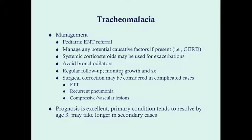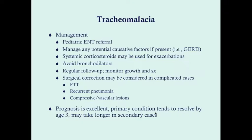Avoid bronchodilators as they tend to worsen tracheomalacia. Schedule regular follow-up to look for failure to thrive and monitor growth and symptoms, which should improve by about two to three years of age. Surgical correction is reserved for complicated cases — failure to thrive, recurrent pneumonia, or compressive/vascular lesions. Prognosis is excellent; the primary condition tends to resolve by age three. In secondary cases, such as after tracheoesophageal fistula repair, resolution may take a little longer.